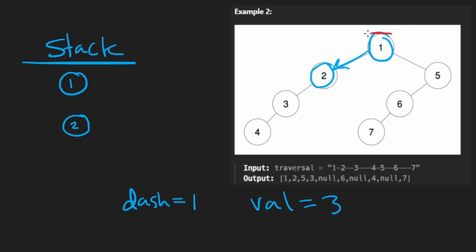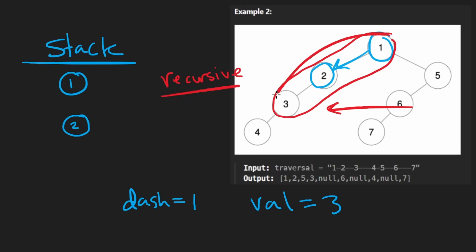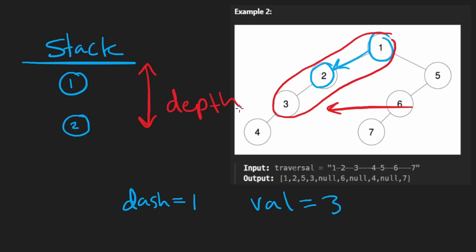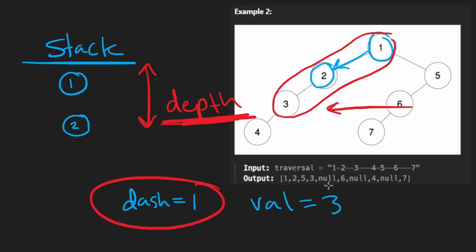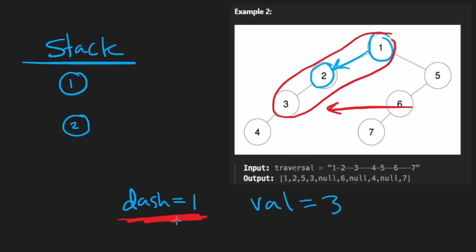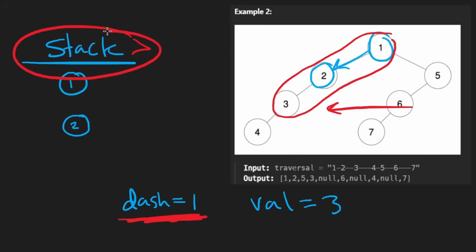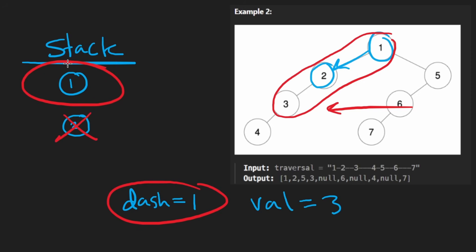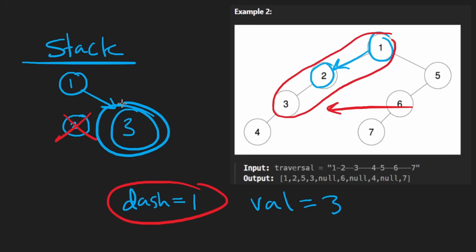The stack tells us how deep we are — just like a recursive call stack. We can use the length of the stack to represent depth and compare it against the number of dashes, which tells us the depth of the node we're inserting. So: keep popping from the stack while its length is greater than the number of dashes. In that scenario with one dash, we pop once, the depth matches, then we push three and connect it as the right child of one since one already has a left child.